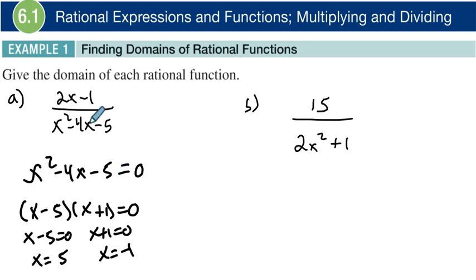So what this means is if x was 5, that would make the denominator zero. 5 squared is 25, minus 4 times 5 is 20, so 25 minus 20 is 5, and then minus 5 is 0. And then same thing with negative 1. If I plug in negative 1, that would make the denominator zero.